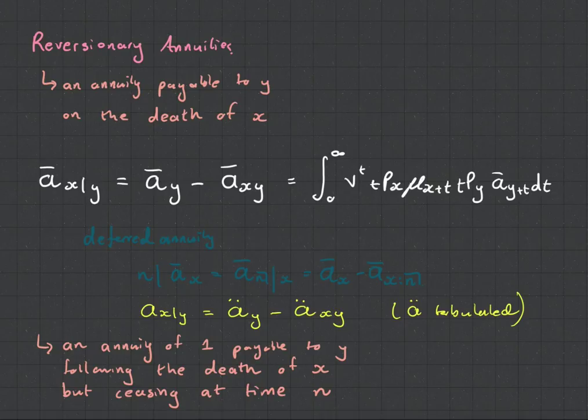Now, what exactly is a Revisionary Annuity? Well, what it is, it's an annuity that pays to a life Y on the death of life X. And the history behind this was back in the day when the man of the marriage would go out and work and the wife would stay at home, this created a bit of a risky situation for the woman because if her husband died, it means the salary stopped coming in and she would have no income.